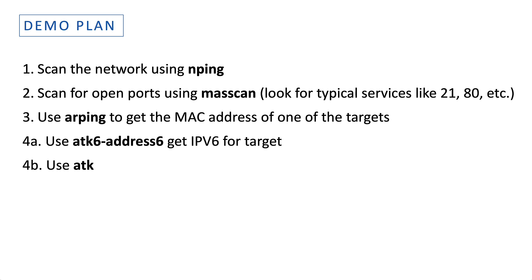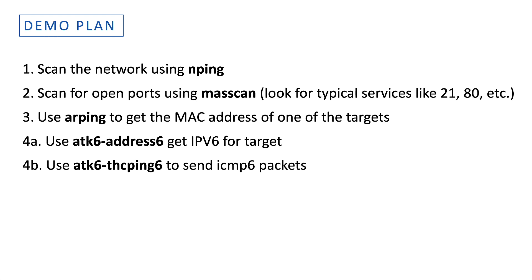Next, I'm going to do two things. I'm going to take the MAC address and use the ATT&CK6 toolkit — specifically a tool called address6 — and from the MAC address I'm going to get the IPv6 address. Then, using the same toolkit but a different tool called THCPing6, I'm going to send some ICMPv6 packets to my target.